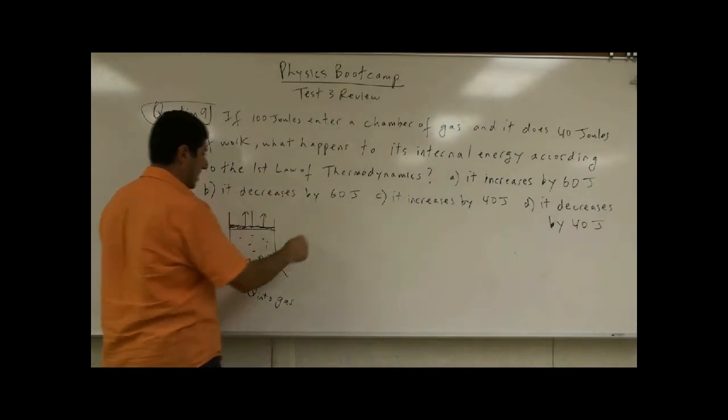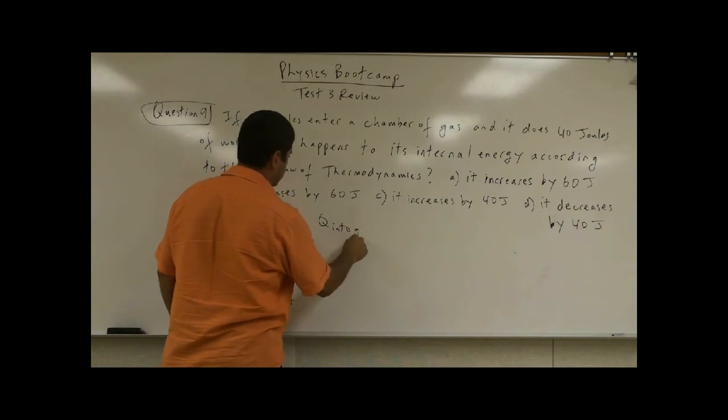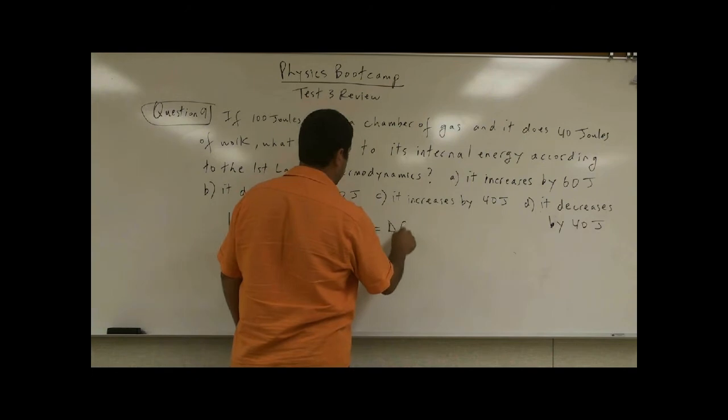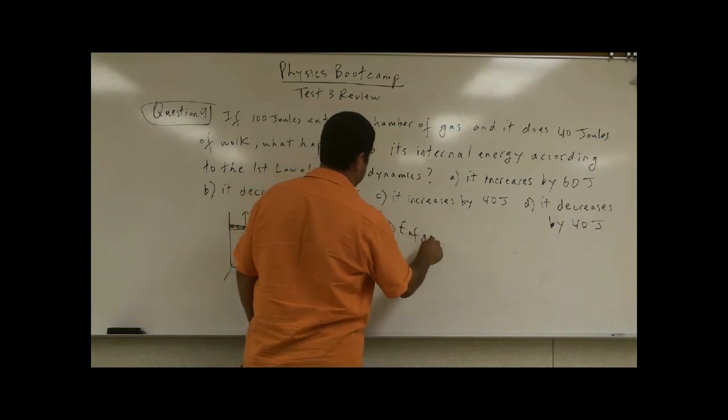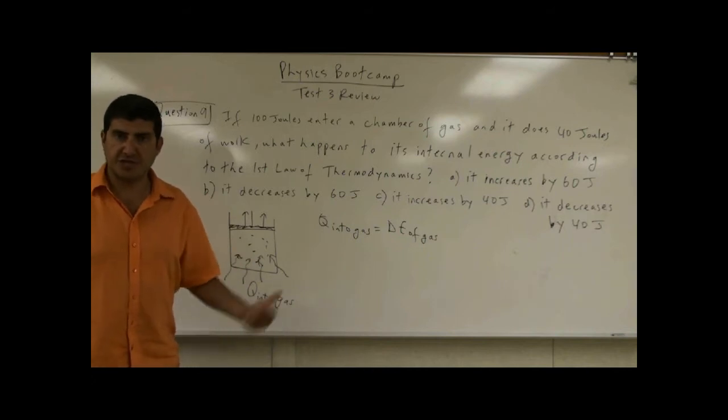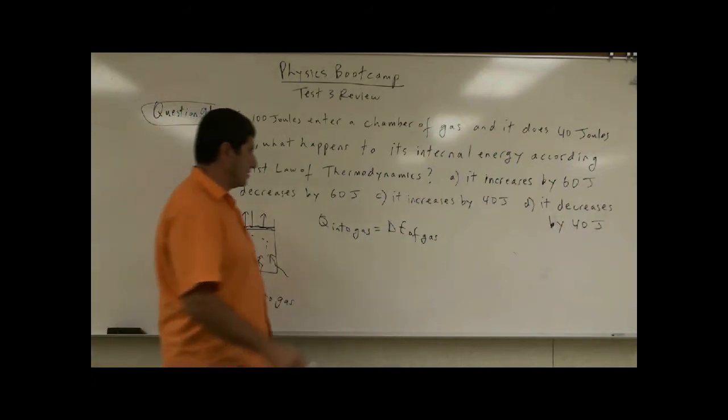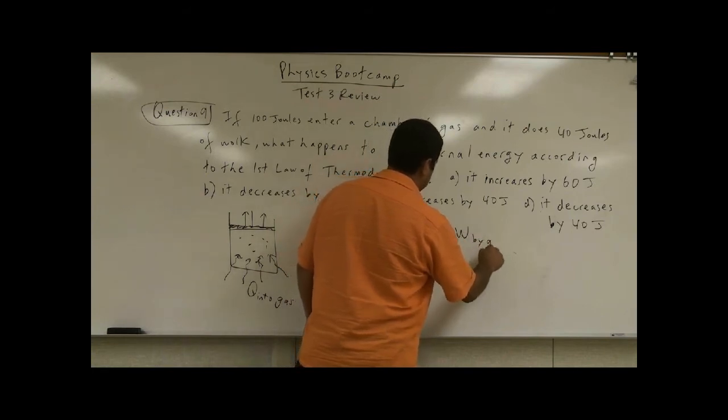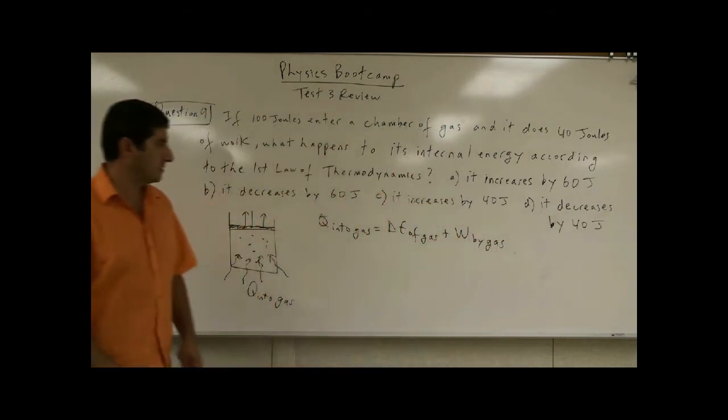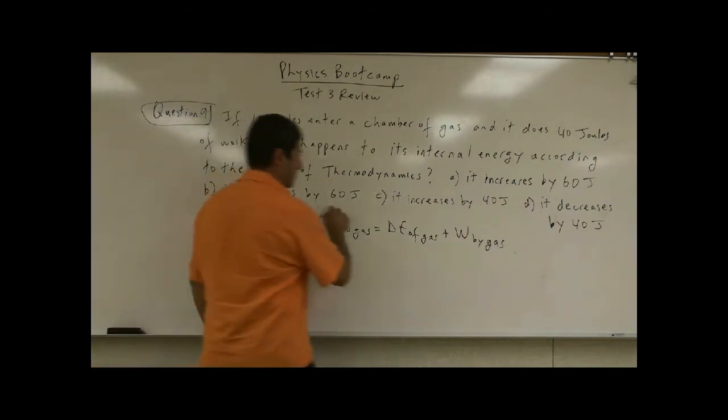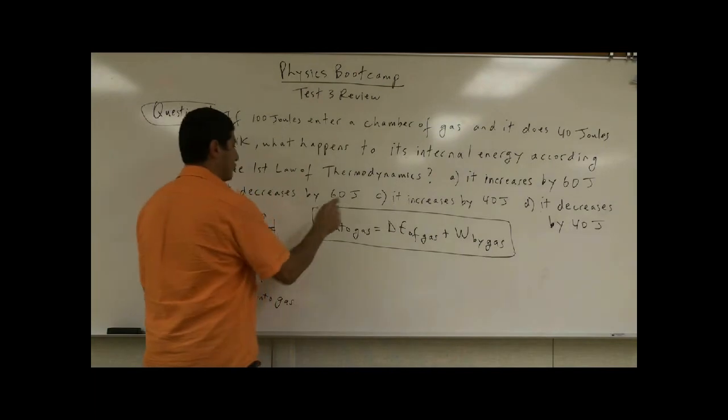So the volume of gas is going to expand to work against the piston. So we say Q into gas is equal to delta E of gas. So change in internal energy of the gas, which means the gas gets hotter, plus the work done by gas. So this is one way of writing and expressing the first law of thermodynamics.